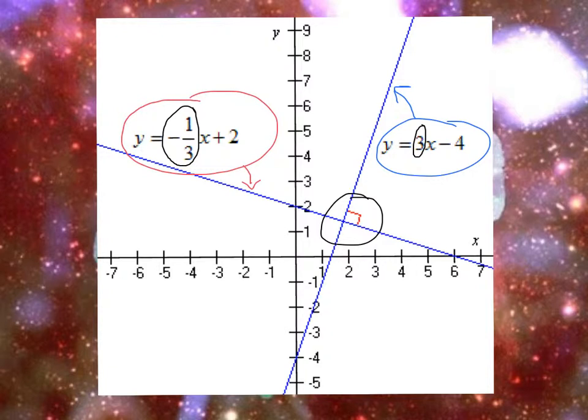Notice for parallel lines, it was the same, but for perpendicular lines, they are not the same number. Instead, what happens? Well, you flip the slope and you change the sign. And that way you will get the perpendicular line.